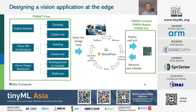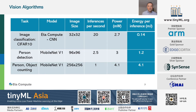Our TensaiFlow software makes it easy to collect data, and we provide optimized neural networks for dedicated use cases. Our Tensai boards can be used for fast prototyping and use our ultra-low-power processor. Our Tensai compiler optimizes the trained neural network to run on the hardware seamlessly. With our neural network compiler and ultra-low-power processors, image classification with CIFAR-10 takes only 0.14 mJ per inference at 20 inferences per second. Person detection is 1.2 mJ per inference at 2.5 inferences per second, and person and object counting can be done with 4.1 mJ per inference at 1 inference per second.